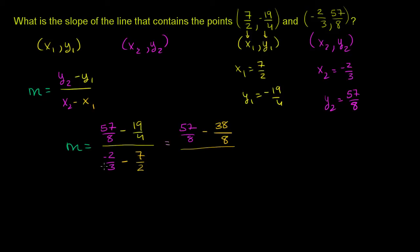And then that's going to be over... a common denominator over here is going to be 6. That's their least common multiple. So -2/3 is the same thing as -4/6. And then -7/2 over 6, if I write it with a denominator of 6, 2 times 3 is 6, so 7 times 3 is 21.